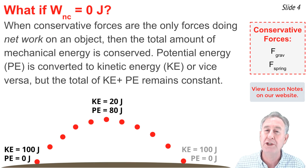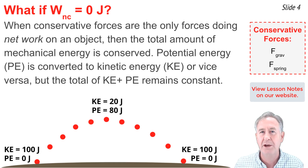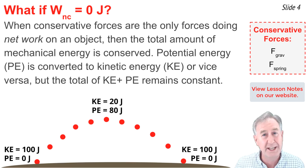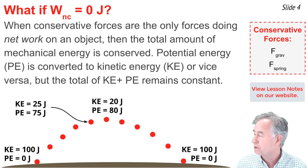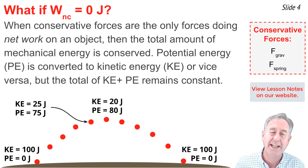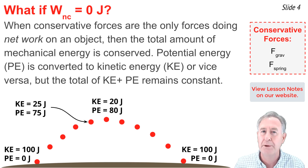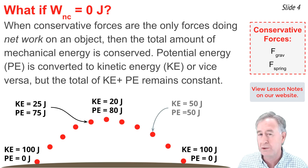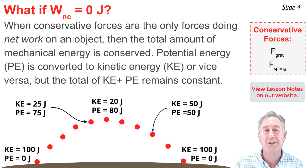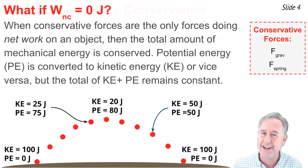When it reaches its original launch height, it would be back to zero joules of potential energy, so just before striking the ground it would have to have 100 joules of kinetic energy again. The total is 100 joules. All along the course of its trajectory, we would notice that the potential energy would be decreasing while kinetic increases, or vice versa, but the total amount remains 100 joules.